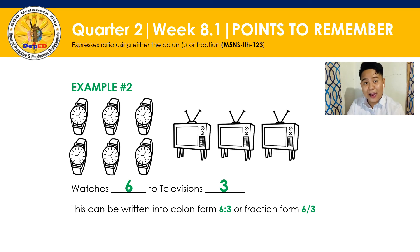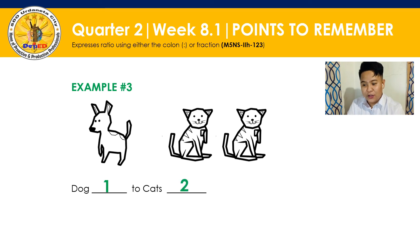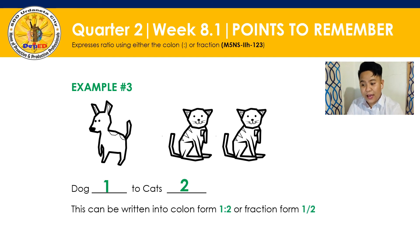Naintindihan na ba, class? Kung hindi pa, another example. We have 1 dog and 2 cats. Nauna yung 1 sa 2. So the ratio is 1 dog to 2 cats. We can write this ratio in colon form: 1 colon 2 or 1 to 2. And in fraction form: 1 over 2.